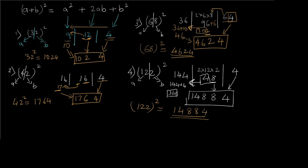So this is how we use the (a + b)² trick to calculate squares of different numbers. It's a pretty cool and quick trick that will help you in your aptitude calculations. If you liked this video, give it a thumbs up, share it with your friends, and don't forget to subscribe to our channel. Peace.